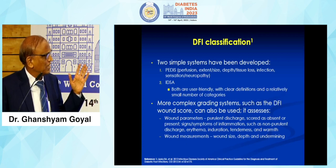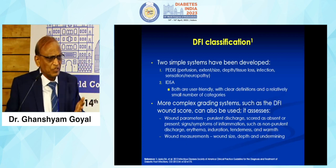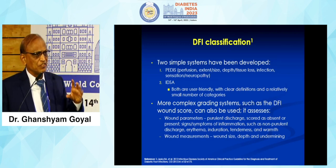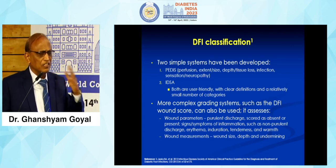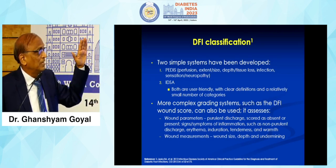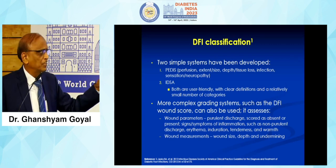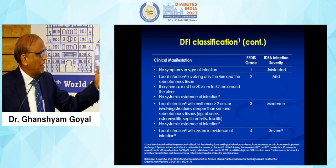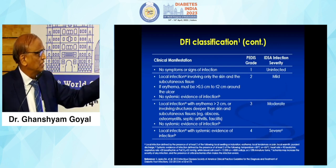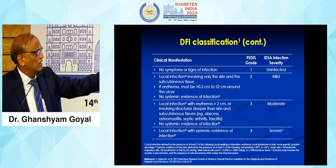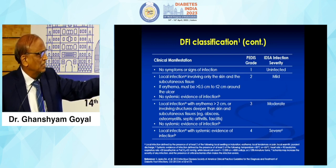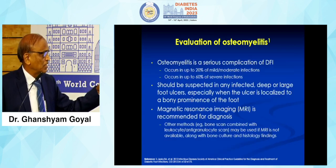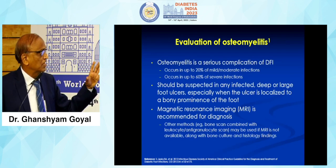Regarding the classification of diabetic foot infection, as Professor Das discussed the diabetic foot ulcer classifications — Wagner's and others — I am going to cover the diabetic foot infection classification. One is PEDIS and another is IDSA. In PEDIS, you have grades 2, 3, and 4, and in IDSA: mild, moderate, and severe. I am going to discuss this because I have to discuss the antibiotics.